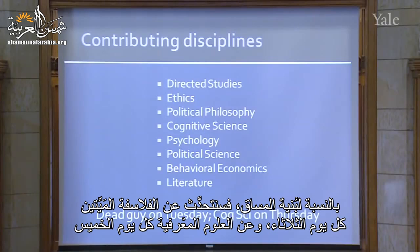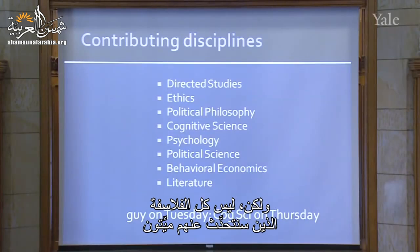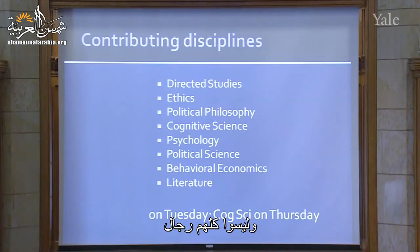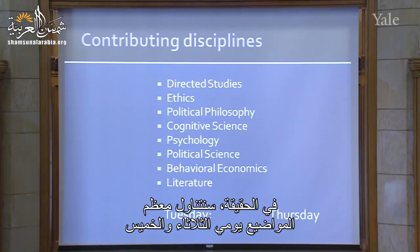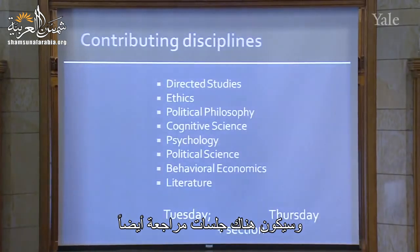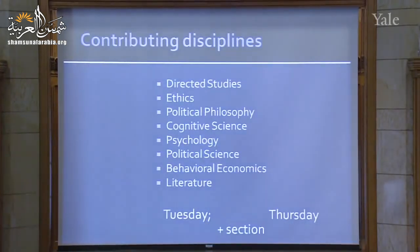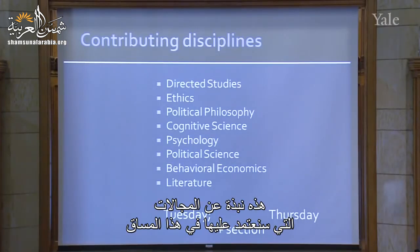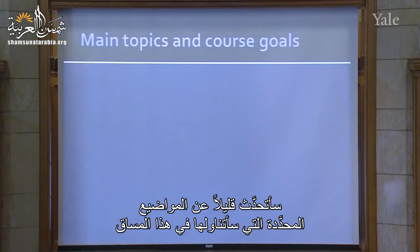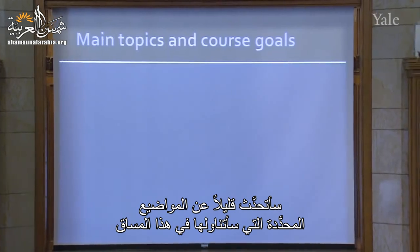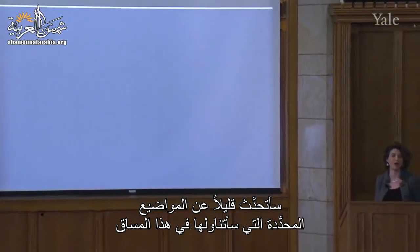In slogan form, the structure of the course is: dead guy on Tuesday, cog-psi on Thursday. Except not all the philosophers we're reading are dead, and not all of them are guys, and not all the other fields are cog-psi, and in fact most things are going to be covered together on Tuesday and Thursday and there are going to be sections. But other than that, the slogan works. So that's an overview of the kinds of disciplines that contribute to the course. Let me say a bit about the specific topics that I hope to address in the course of the semester.